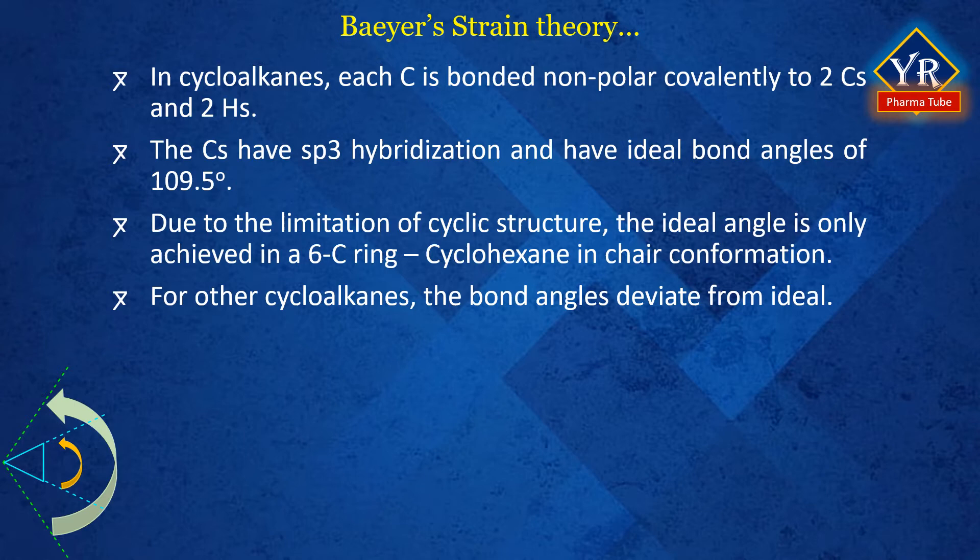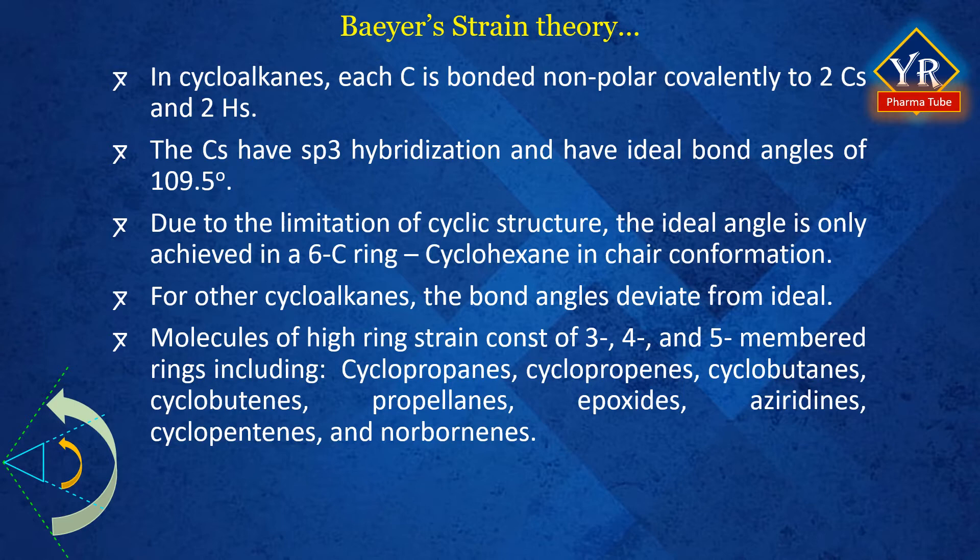Molecules with a high amount of ring strain consist of 3, 4, and some 5-membered rings including cyclopropanes, cyclopropenes, cyclobutanes, propellanes, epoxides, aziridines, cyclopentenes, and norbornenes.